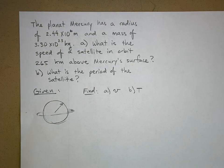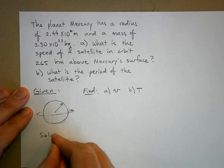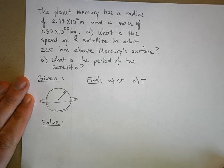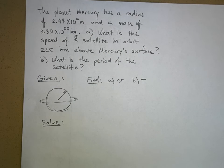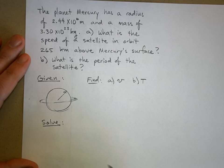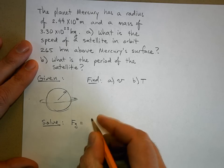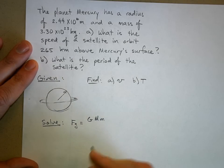So let's solve it. To find the speed, you could start with the orbital velocity equation but I like to start from basic principles. The force of gravity is equal to the universal constant times the mass of Mercury times the mass of my spacecraft over the radius of the orbit squared.